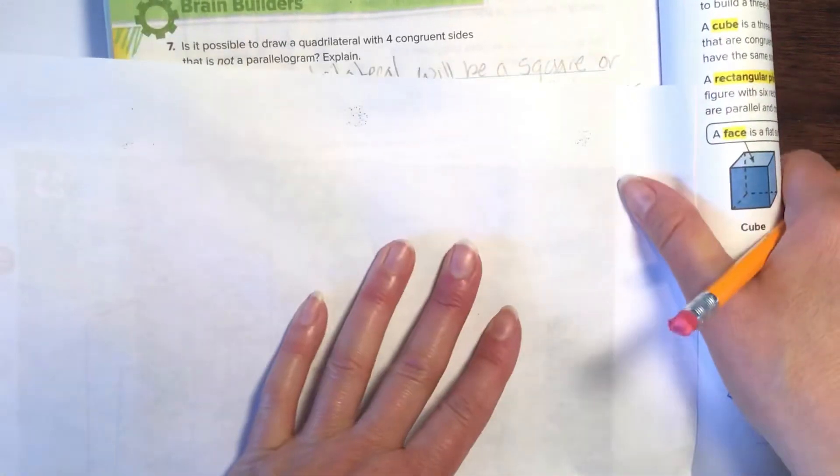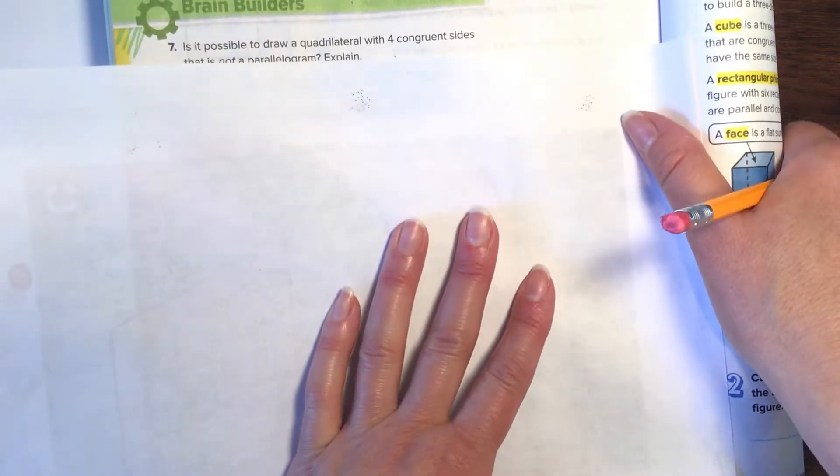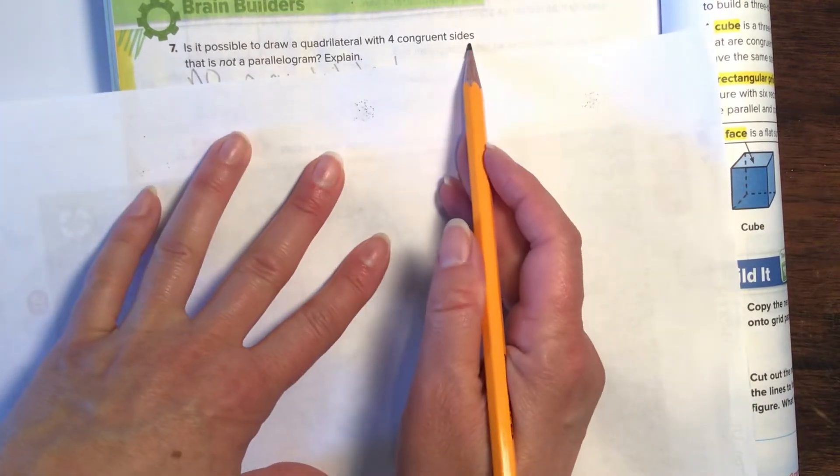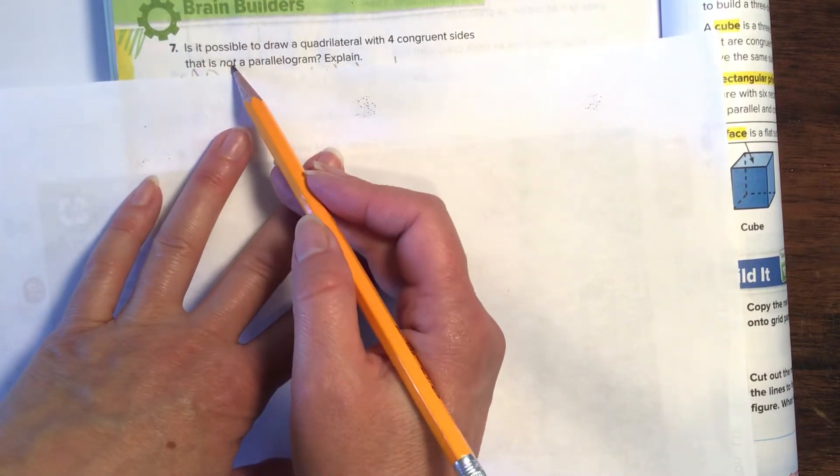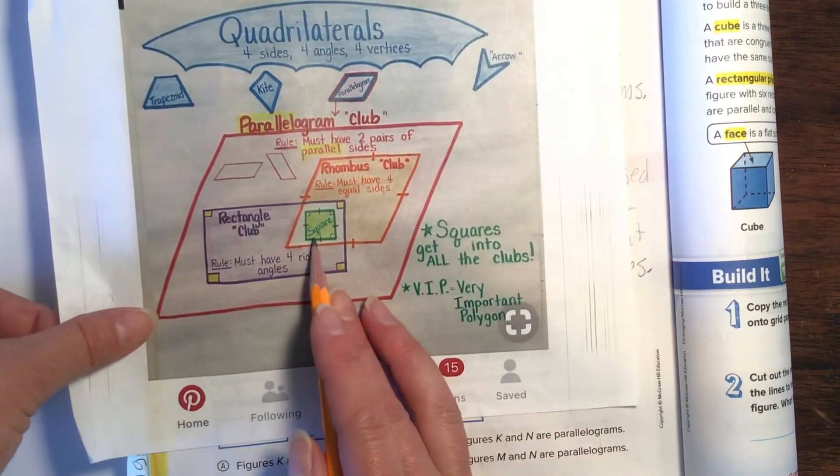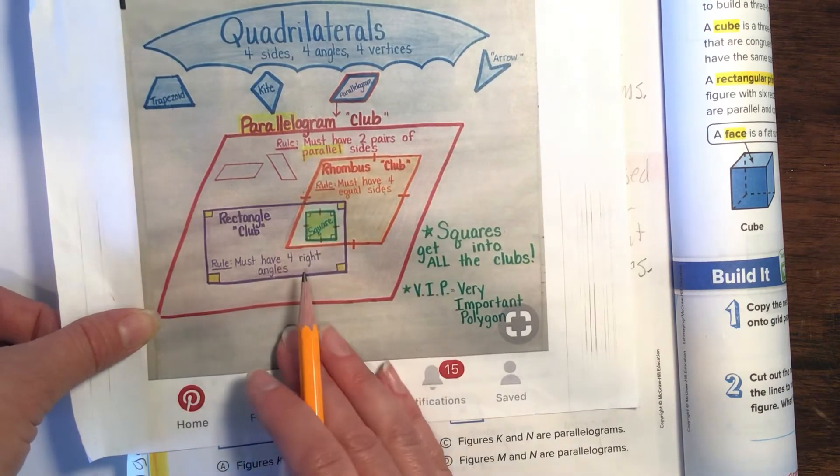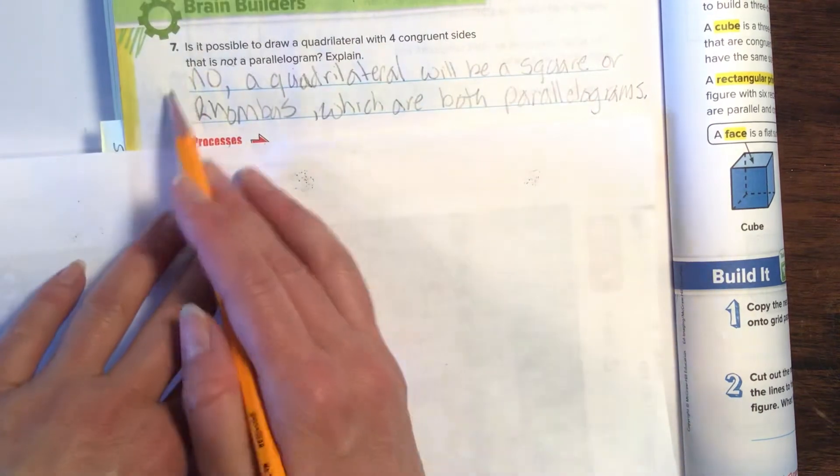We're moving down to number seven, Brain Builder. This one's fun. Is it possible to draw a quadrilateral with four congruent sides that is not a parallelogram? So they want us to draw a quadrilateral of four congruent sides, which means the same size, and have it not be a parallelogram. Is that possible, folks?